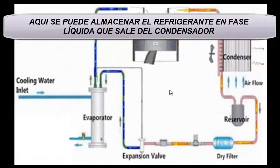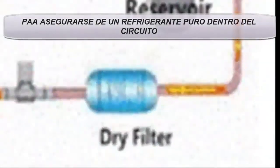4. Liquid receiver to store the refrigerant that comes out in the form of liquid from the condenser. 5. Humidity filter dryer to retain impurities.